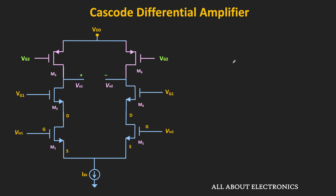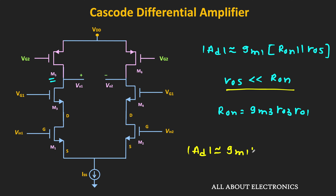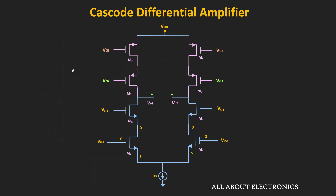For example, if we use the PMOS current source, then the gain of this differential amplifier will become GM1 times RON in parallel with R05, where R05 is the output impedance of MOSFET M5. Naturally, R05 will be much less than RON, because RON is equal to GM3 times R03 times R01. Under this condition, the differential gain is approximately equal to GM1 times R05. So the gain of the differential amplifier will reduce significantly, and in such condition, the purpose of using the cascode pair is not served very well. That means if we want to utilize the advantage of the cascode configuration, the output impedance of this current source should be very high, and that can be achieved by using the cascode current source.